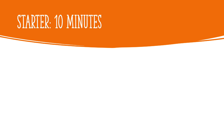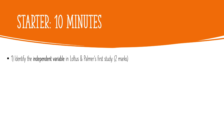For your starter, take 10 minutes — feel free to grab your textbooks and notes from last lesson. I want you to answer four questions, maybe five if you're feeling up for the challenge. Number one is to identify the independent variable in Loftus and Palmer's first study — what did the researchers manipulate, what did they change?